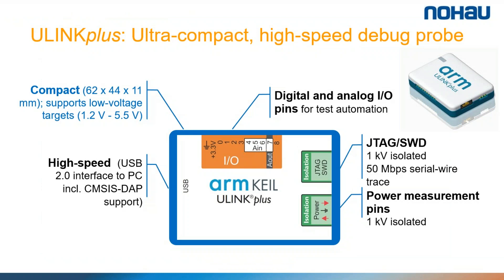A little bit more detail about the Ulink+. It's a very compact device — only 62 by 44 millimeters in size — and the connection to your PC is USB 2.0 with a micro-USB connector on the device. It has digital IO pins, and you have the JTAG or SWD debug interface which is a standard 10-pin ARM connector available on most boards with Cortex-M devices. It also has a port for power measurements.